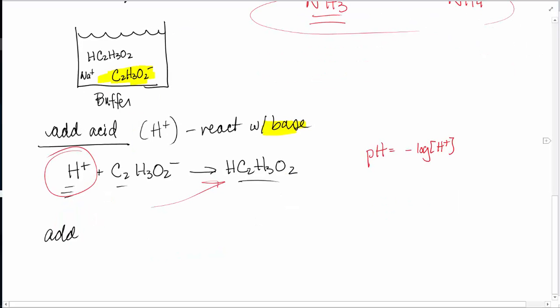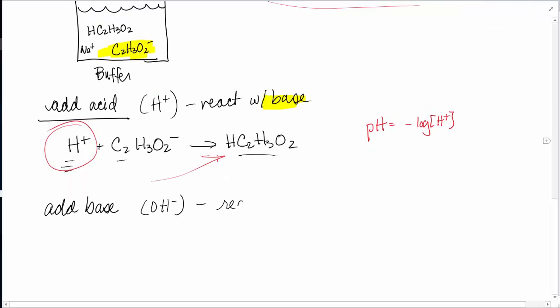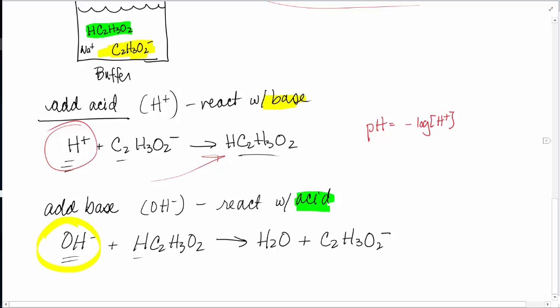Or let's say that I add a base to the buffer, so some sort of OH minus contributor. Well, a base is going to react with the acid part of the buffer. So my acid part of the buffer is the acetic acid. So I'm going to react my base, OH minus, with the acid, HC2H3O2 goes to completion, acid plus base. This grabs an H. We form water. And I get the C2H3O2 minus back. Well, OH minus could have made it more basic. But what we do is we react it, and then it's gone.